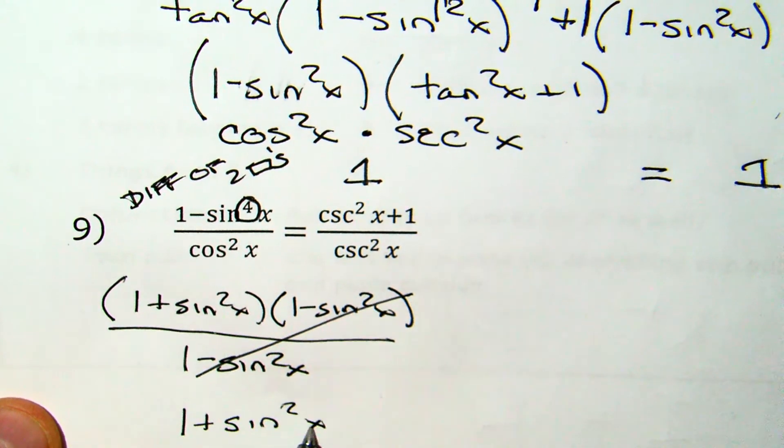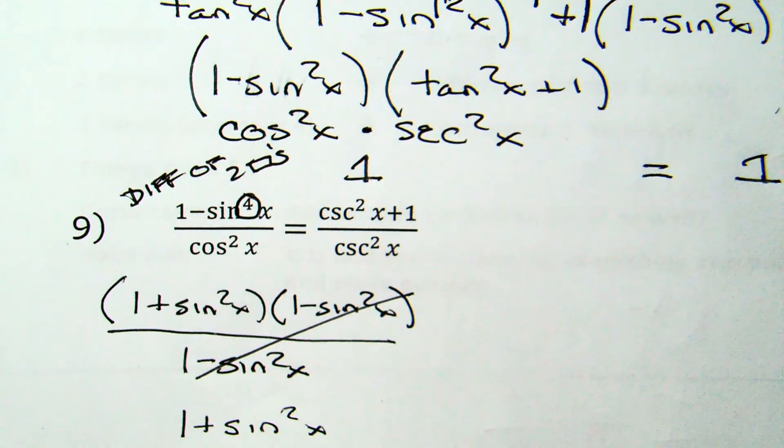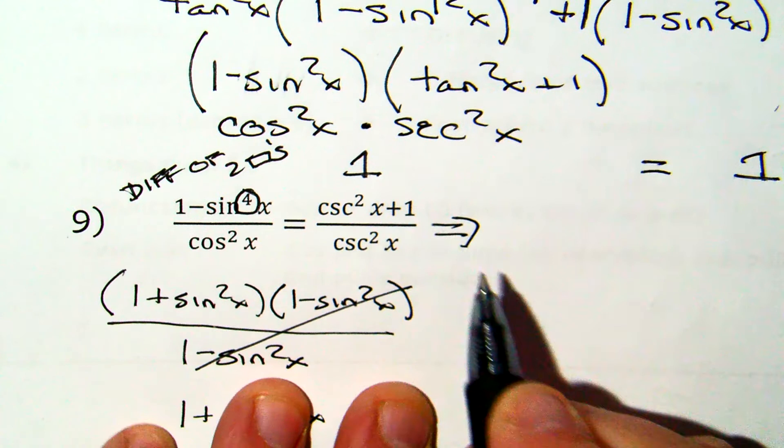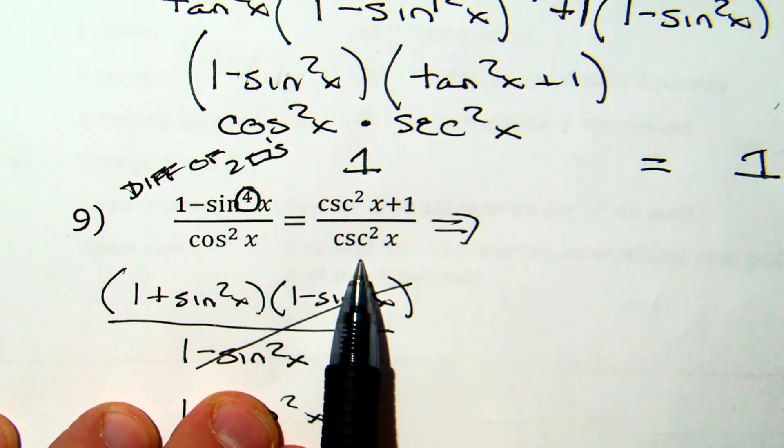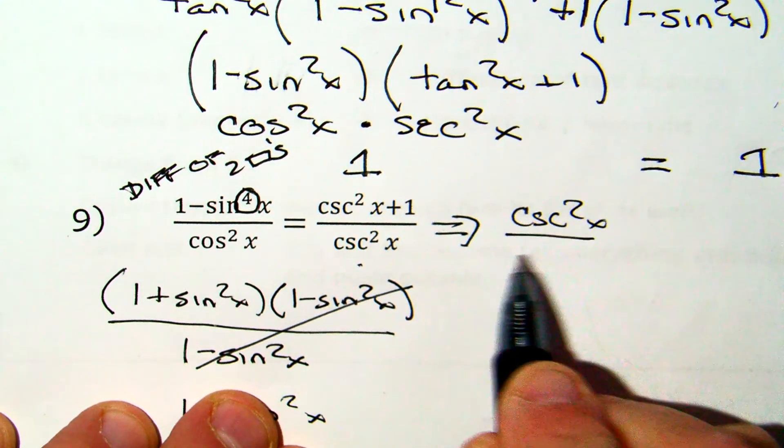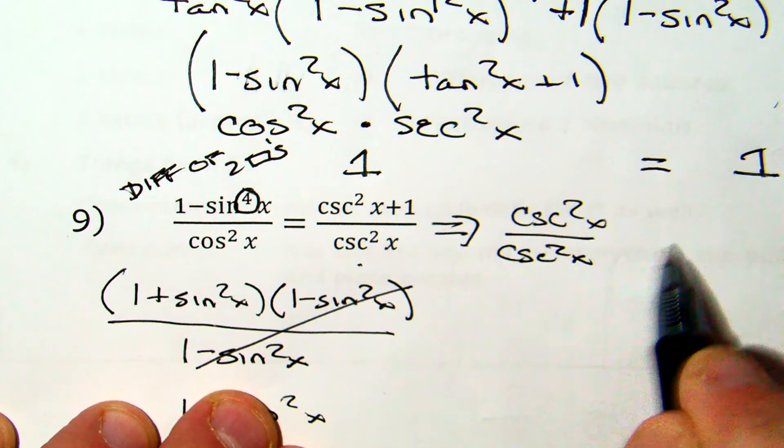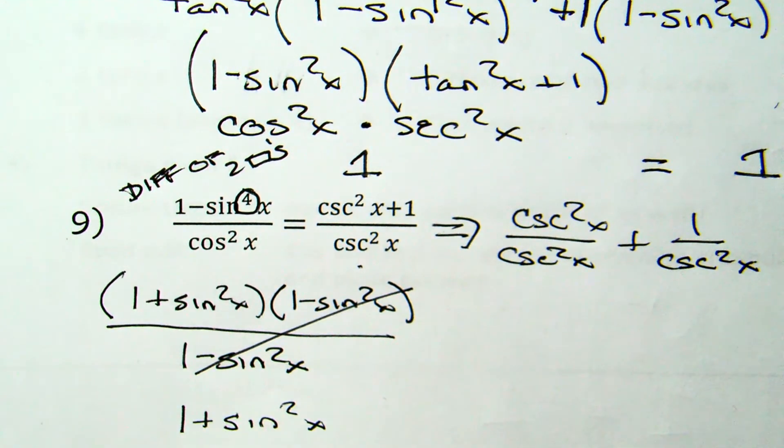So you're kind of done, which means now you've got to focus on the right-hand side. The right-hand side is a fraction with a monomial, so we're going to divide through. We're going to do csc²x/csc²x plus 1/csc²x.